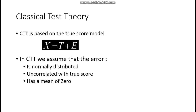CTT is based on the true score model where X is the observable score, T is the true score, and E is the error score — meaning the observed score is always a combination of the true score and the error score. The true score is estimated depending on the amount of error. In CTT, we assume that the error is normally distributed, meaning all respondents are exposed to the same error, it is not correlated with the true score, and it has a mean of zero.